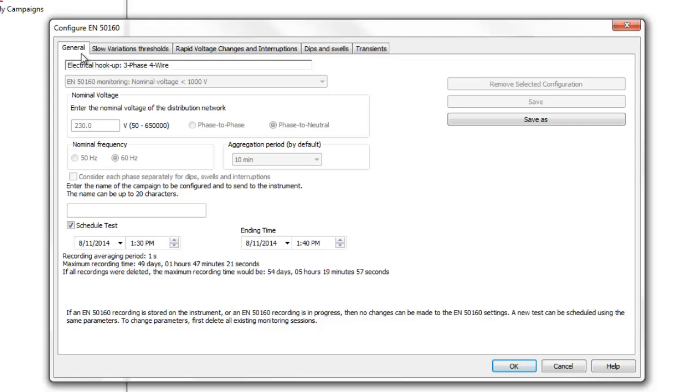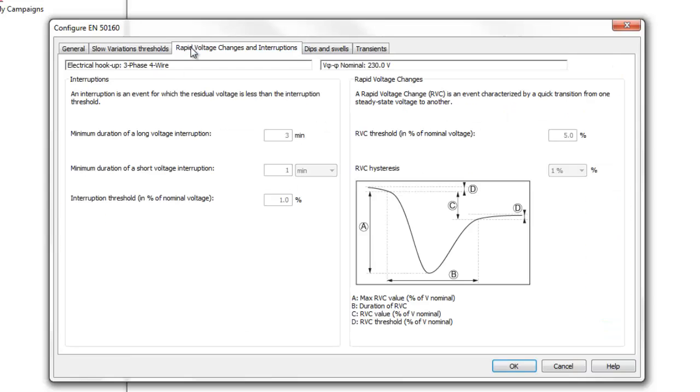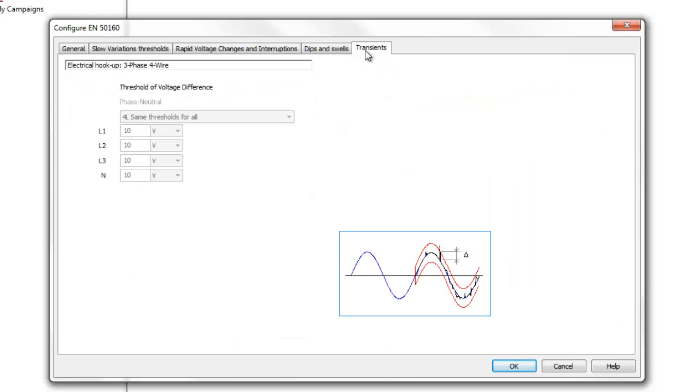You can also name and schedule an EN 50160 monitoring session. Slow Variations sets parameters for identifying how much a measurement varies from its acceptable value defined by EN 50160. Rapid Voltage Changes and Interruptions configures the monitoring session for detecting rapid voltage changes and interruptions in the system under measurement. Dips and Swells define settings for monitoring dips and swells, also known as overvoltage events. Transients sets conditions for capturing transients in the system.